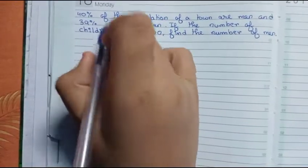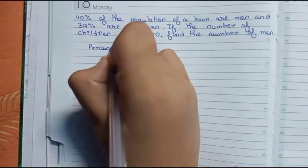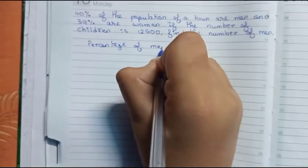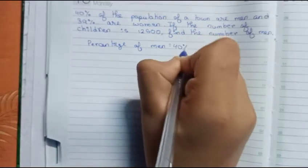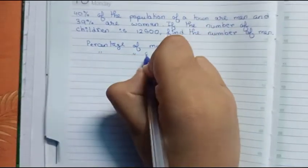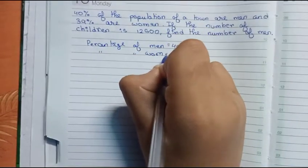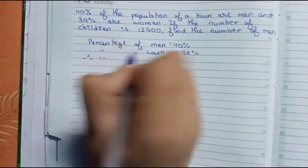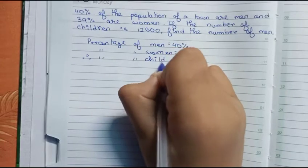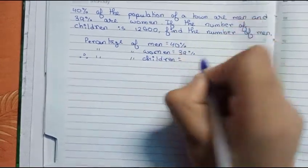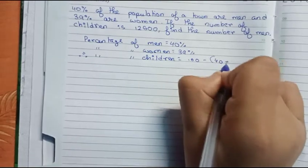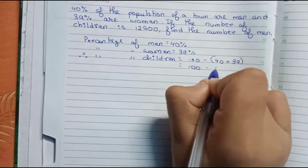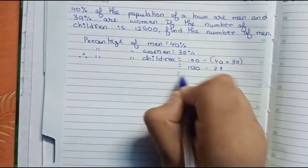So first we write percentage of men, so this is equal to 40%. Now the percentage of women equals to 39%. So therefore the percentage of children equals to 100 minus 40 plus 39, which is equal to 100 minus 79, that is 21%.